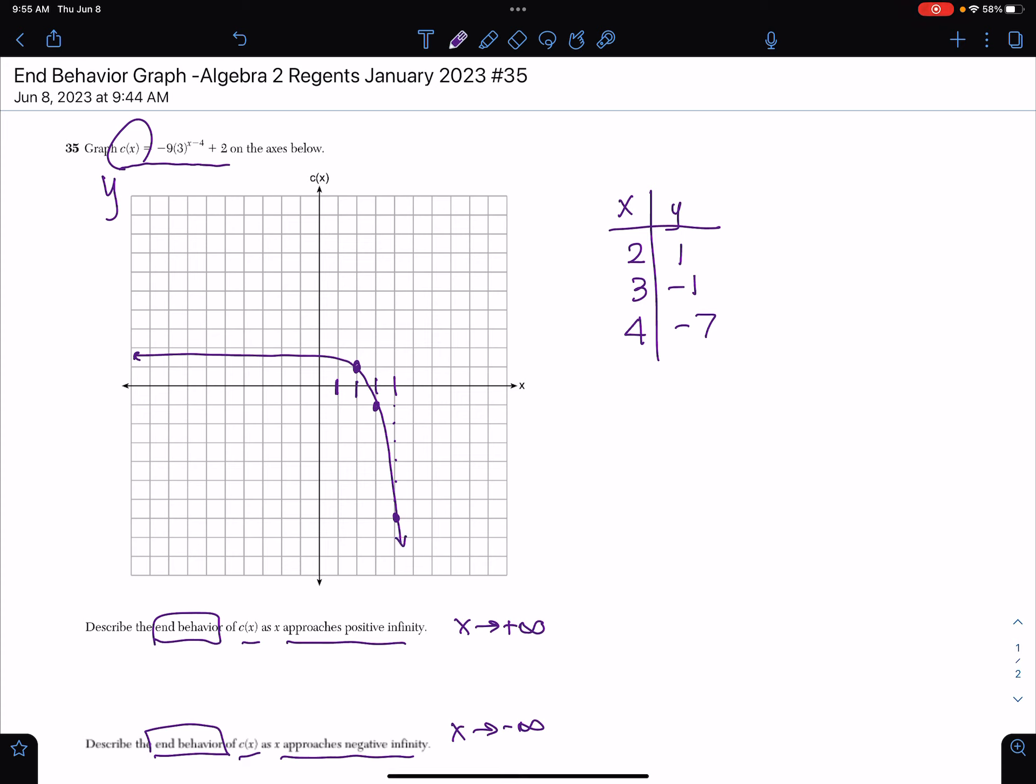Now, the question says describe the end behavior of c as a function of x as x approaches infinity. So as x approaches infinity, what happens to the y is that it's going down. So that means as x approaches positive infinity, c of x approaches negative infinity because it's going down.